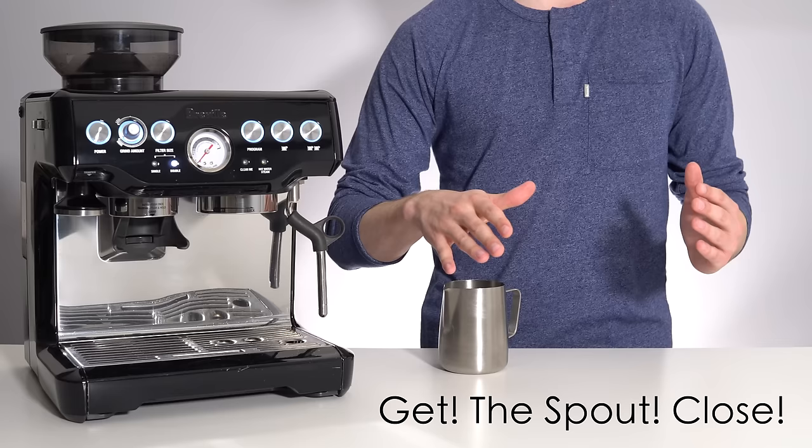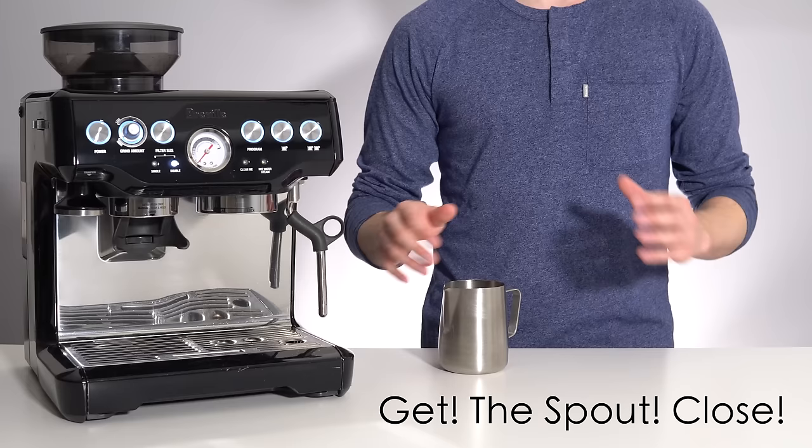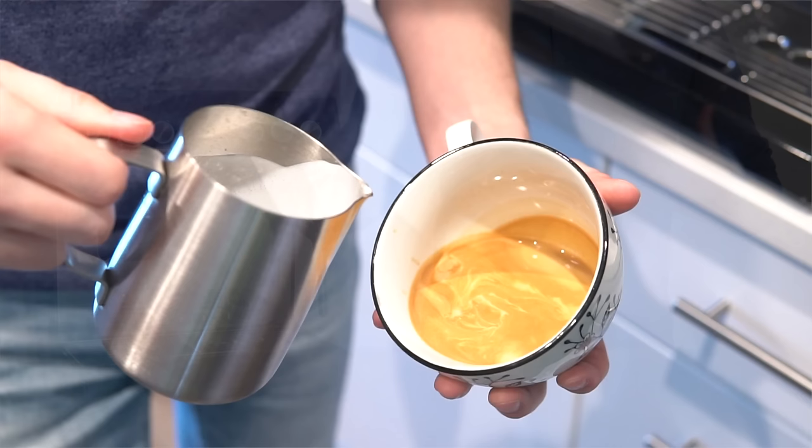Milk will simply not sit on top if you do not get close enough, no matter how perfectly you steamed it. Having a cup with a wide opening and tilting aggressively will help you achieve this.